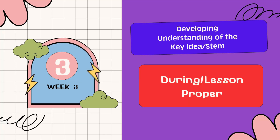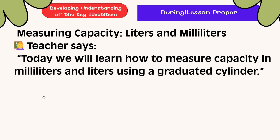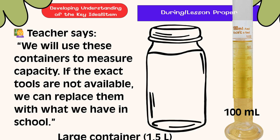Developing Understanding of the Key Ideas. Measuring Capacity in Liters and Milliliters. Today, we will learn how to measure capacity in milliliters and liters using a graduated cylinder. We will use these containers to measure capacity if the exact tools are not available. We can replace them with what we have in school — a large container of 1.5 liters and a 100 mL graduated cylinder.